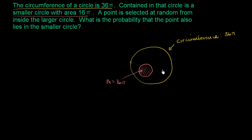What is the probability that the point also lies in this smaller circle? Here it's a little bit interesting, because you actually have an infinite number of points in both of these circles — not separate balls or marbles like in the first example, or separate numbers. There's an infinite number of points you can pick here. So when we talk about this probability, we're really thinking about the percentage of points in the larger circle that are also in the smaller circle. The probability is really just going to be the ratio of the areas.